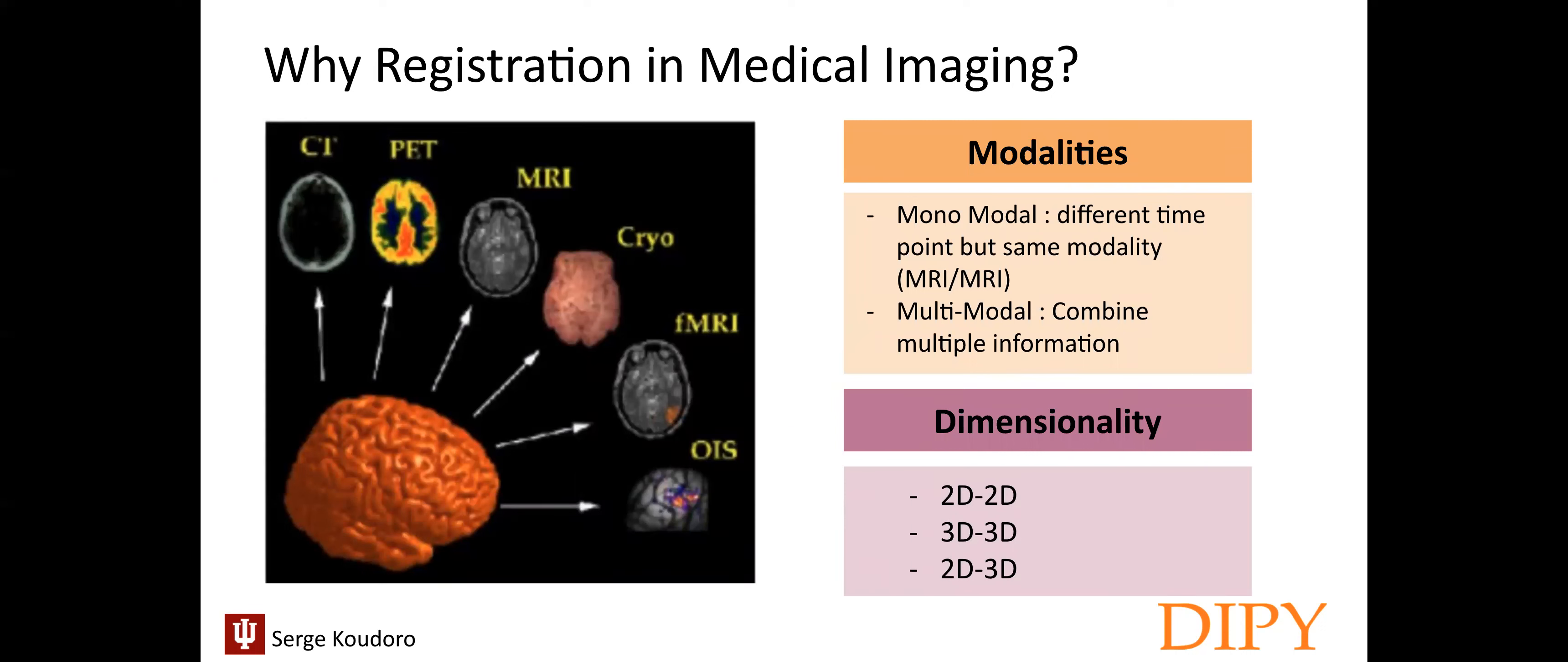The first reason is a variety of modalities and dimensionality in medical imaging. A subject can have a scan at different periods of time and you might want to compare them. For this task, you need to align your data whatever the dimensionality you use, meaning if you have a 2D slice or if you want to compare a 2D slice with a 3D volume. Same story with modalities. Different types of data can be obtained in medical imaging like CT, PET, MRI, cryo, fMRI, or DWI.